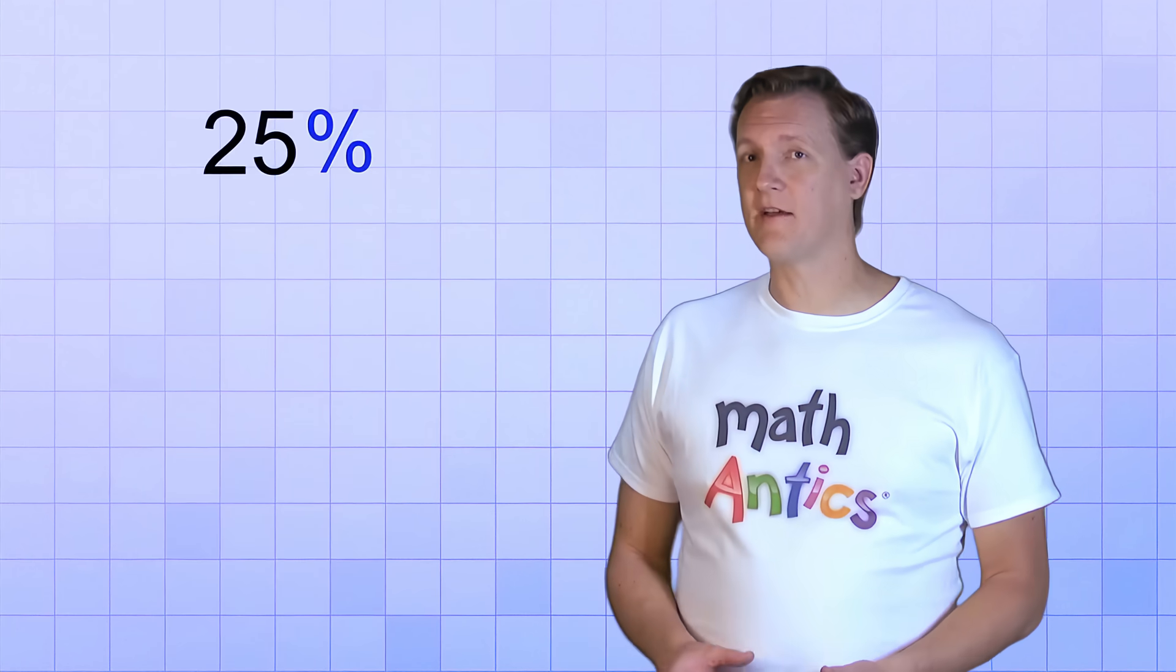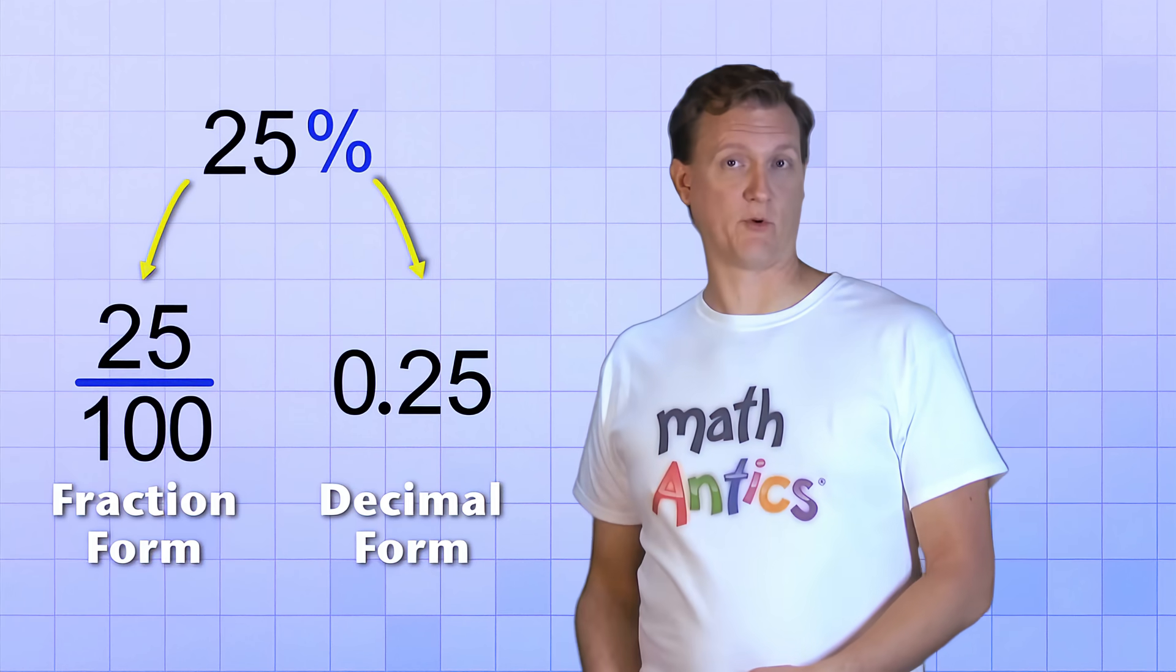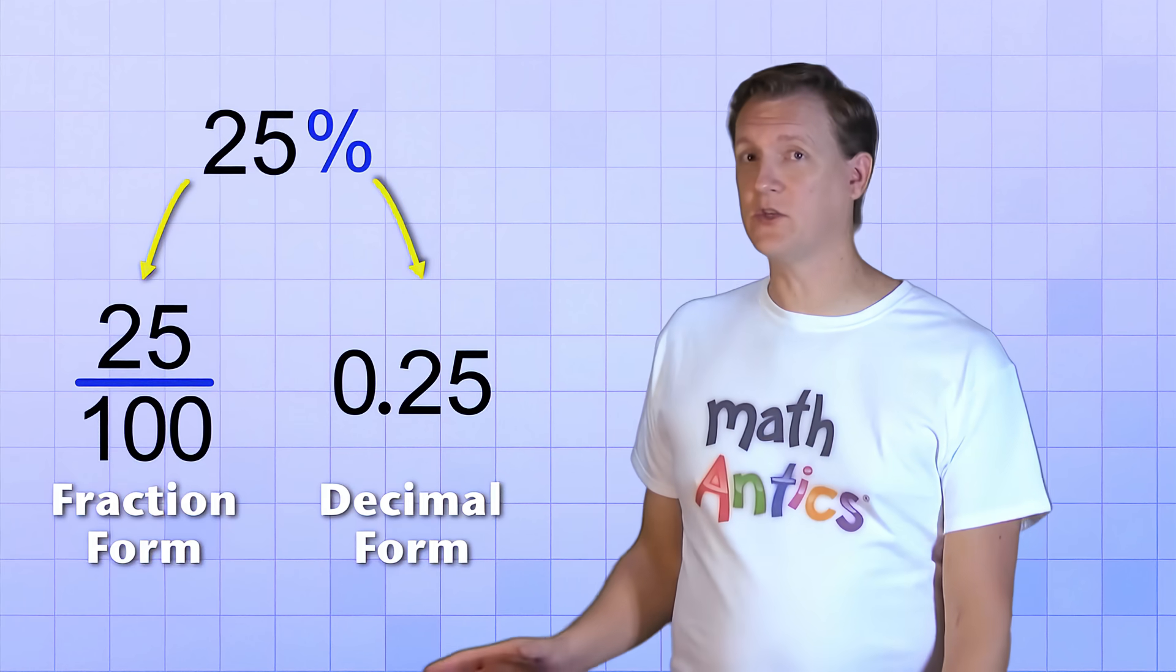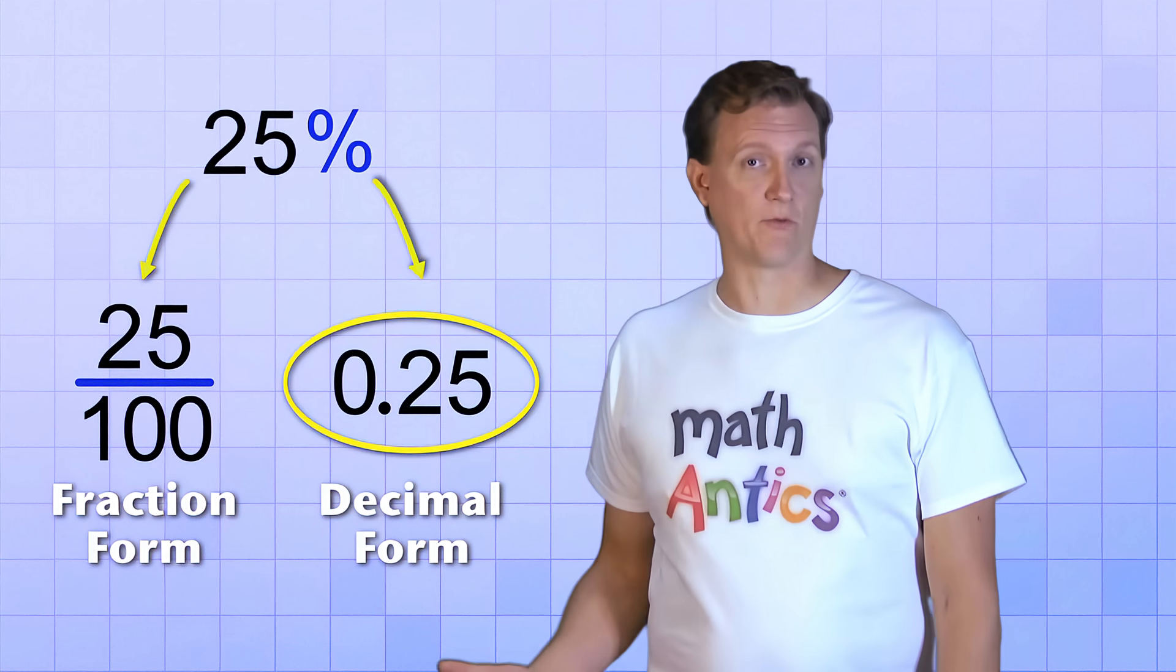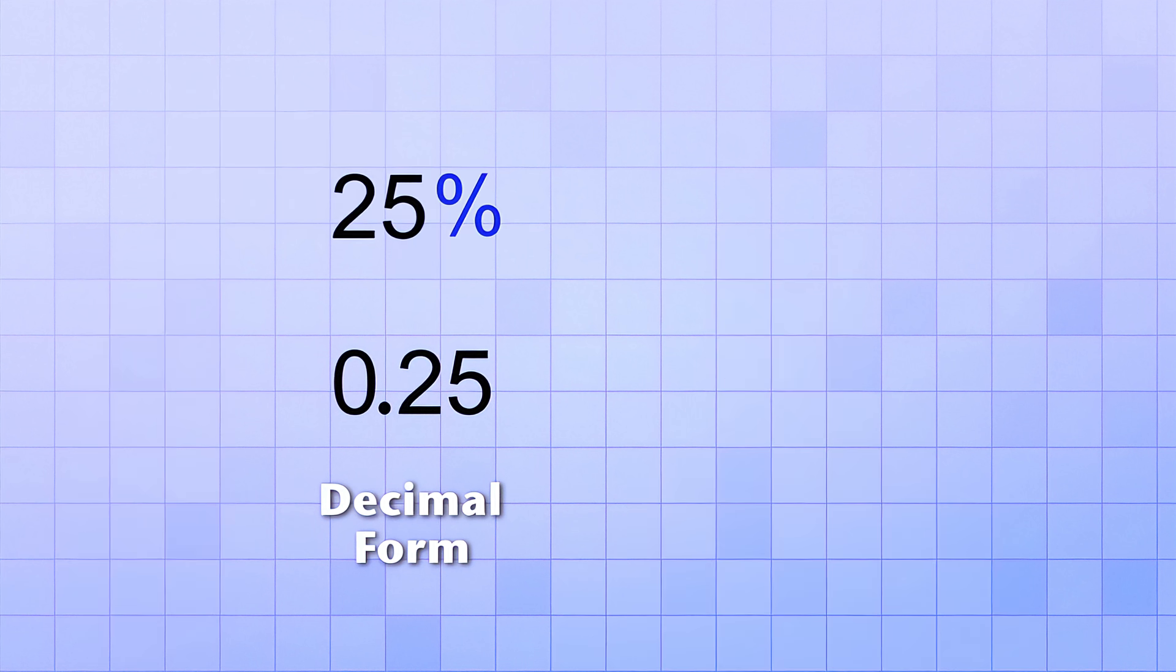In our first percentages video, we learned that percents have both a fraction form and a decimal form. We've already seen how we can use the fraction form to find a percent of a number, but we can also use the decimal form if we want to instead. The procedure starts the same. If you need to find 25% of 20, you first replace the word of with the multiplication symbol.